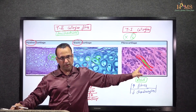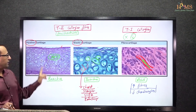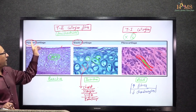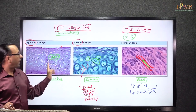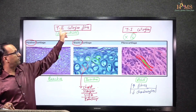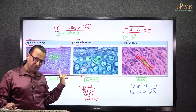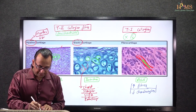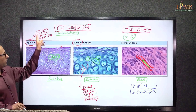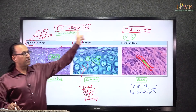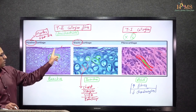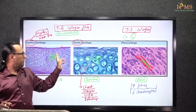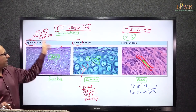Why are collagen fibers not visible here? Because in hyaline cartilage, despite having type 2 collagen, the fibers are not visible. It is called hyalos — meaning glass-like — because the refractive index of the collagen fiber is the same as the matrix, so the collagen fibers are not visible. It is an optical illusion.